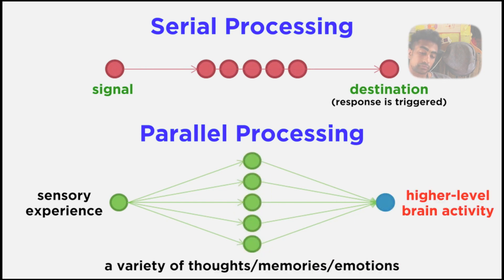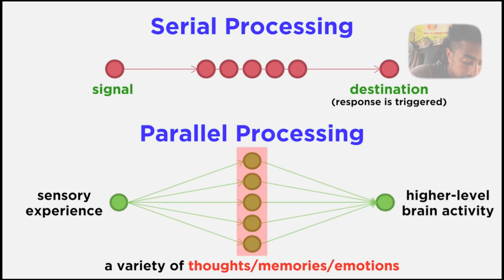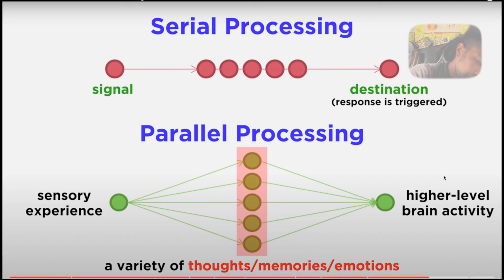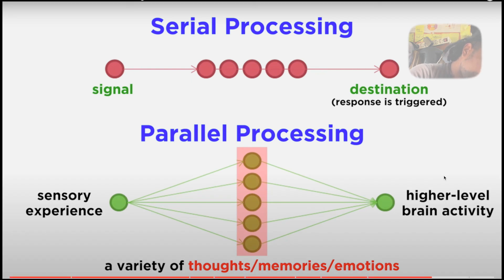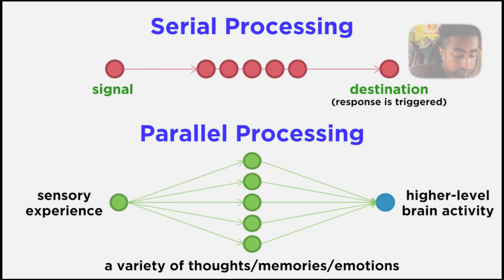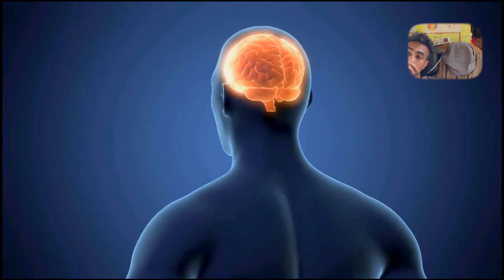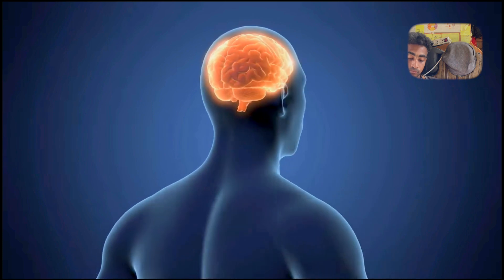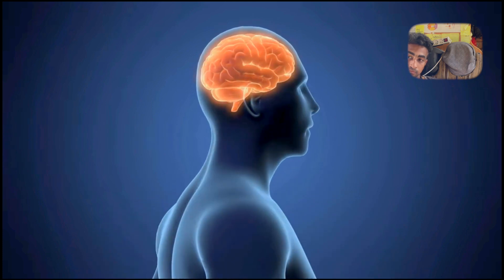Parallel processing is behind most higher-level brain activity in humans, as we are capable of synthesizing all kinds of information to recognize obscure objects, think abstractly, make plans, and do all the other incredible things that humans can do. Let's now move forward and look at how the brain handles all of this information.